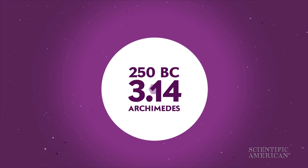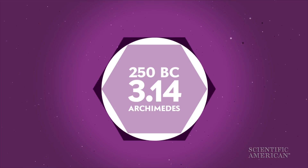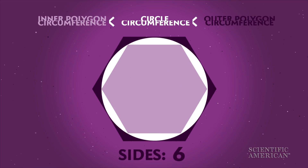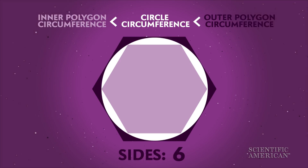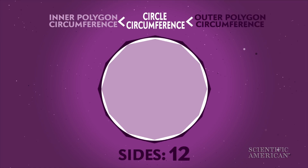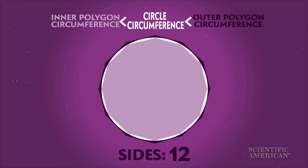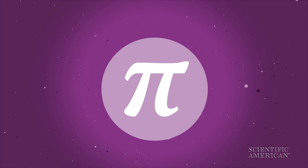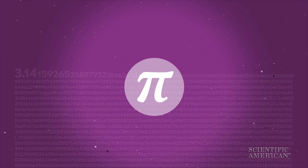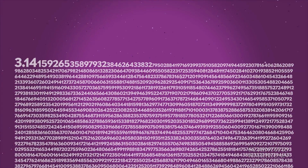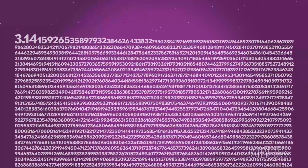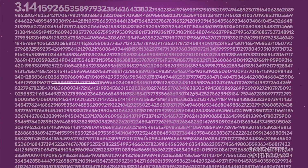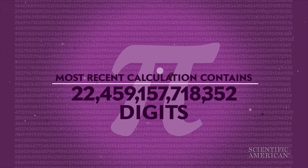Archimedes solved for pi by drawing polygons around a circle. You can multiply the polygon's number of sides by the length of each side to find its circumference. The more sides the polygon has, the closer it is to the actual circumference of the circle, and the closer you are to pi's true value. Modern researchers have created a variety of increasingly complex methods to crunch the numbers, and supercomputers have now calculated pi to trillions of digits.